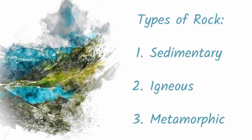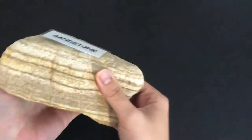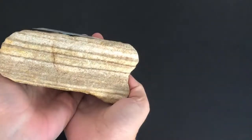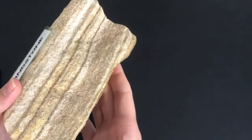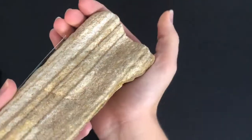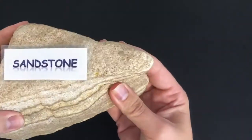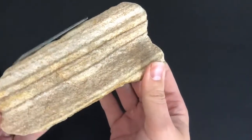Let's start with sedimentary rock. Sedimentary rocks are made up of sediments that have been eroded away and deposited somewhere, and then after that deposition, with a lot of compaction, they're actually compacted into a rock. The rocks tend to show us these beautiful layers of the different sediments that have been deposited in a particular place over time. It's those layers that help us identify them as sedimentary.